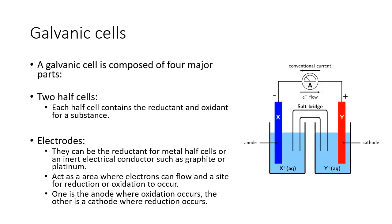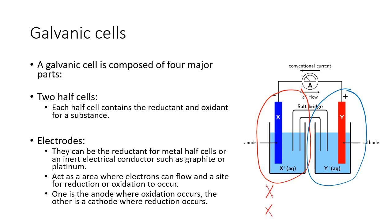A galvanic cell is composed of four major parts. The first is two half cells — here's one half cell and here's another. Each half cell contains the reductant and the oxidant for a substance. This one has X solid and X⁺(aq) — the metal and the metal ion. The metal undergoes oxidation, so it is the reductant, and the metal ion is the oxidant which undergoes reduction. Then you have the opposing half cell with Y and Y⁺. Both half cells contain the reductant and the oxidant for that particular half cell.